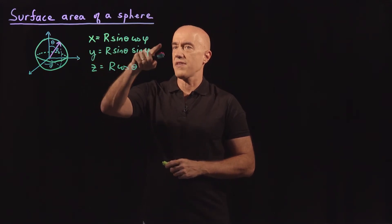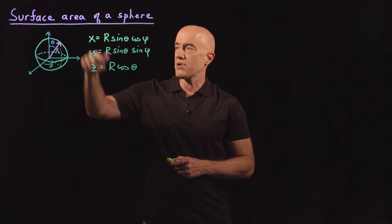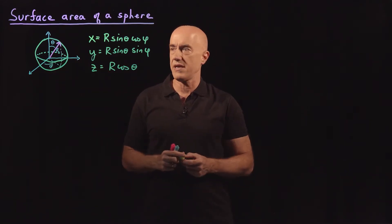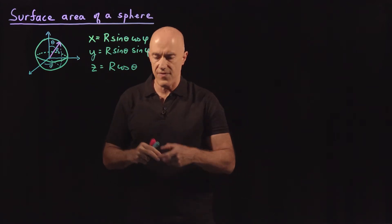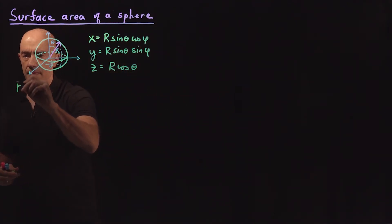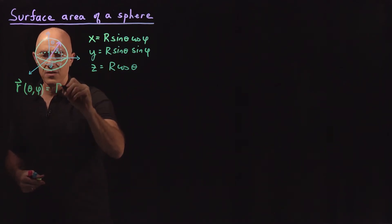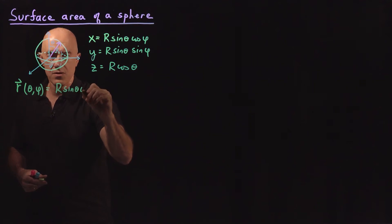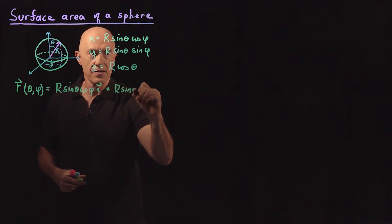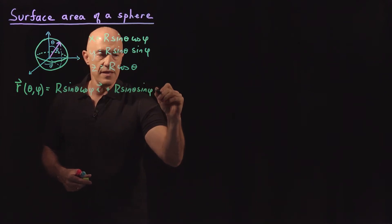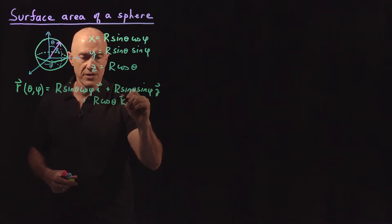So x = R sinθ cosφ, y = R sinθ sinφ, and z = R cosθ. Capital R is fixed, so the sphere has a fixed radius R. So this is a parameterization of the sphere in terms of the angles θ and φ. So our r, which is a function of the parameters θ and φ, is equal to R sinθ cosφ in the i direction, plus R sinθ sinφ in the j direction, plus R cosθ in the k direction.